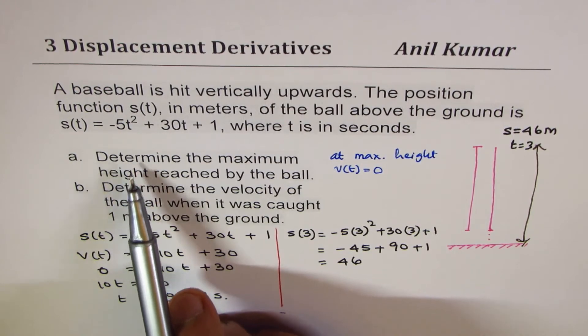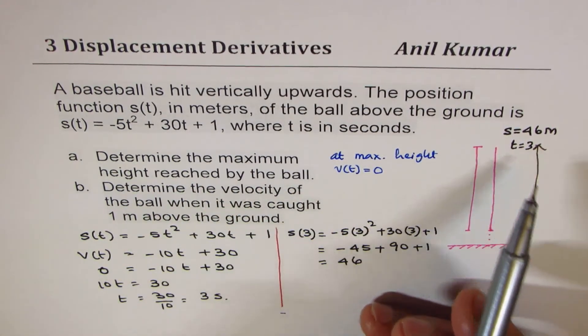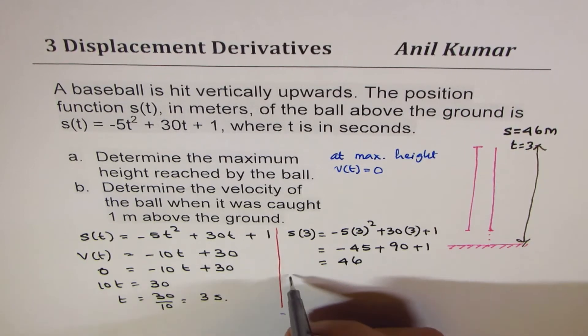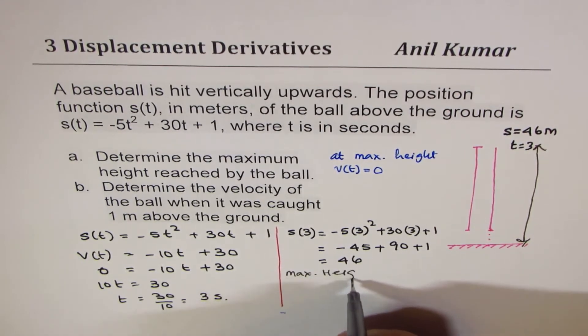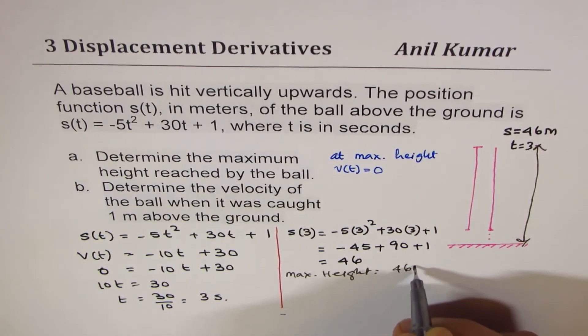So first part we have done, determine the maximum height reached. The maximum height reached is 46 meters. So our answer is maximum height is 46 meters.